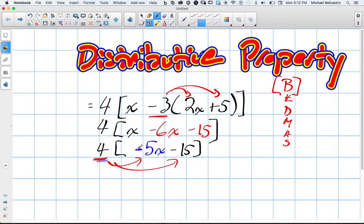So we start with 4 times negative 5x. That will give us negative 20, and the x still stays. And then 4 times negative 15. We're going to have a negative answer, and 4 times 15 is going to be 60. So I'll keep our equal sign here.